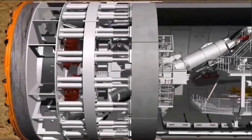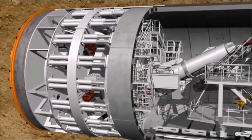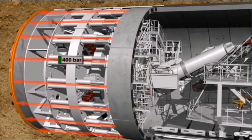During the tunneling phase, the cutting wheel, which rotates at a speed of up to 2.7 revolutions per minute, is pressed against the tunnel face with a pressure of up to 400 bar, by means of hydraulic cylinders.